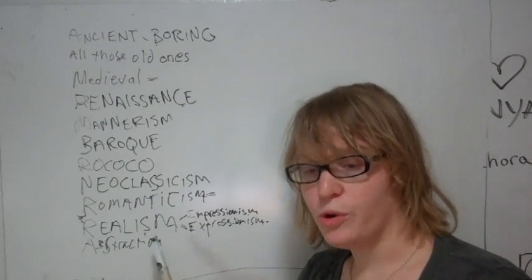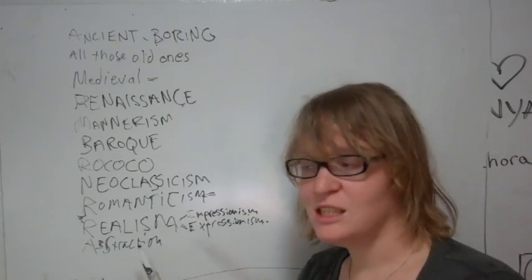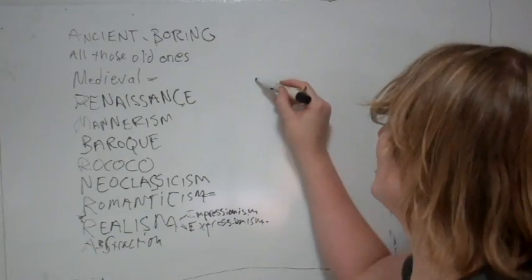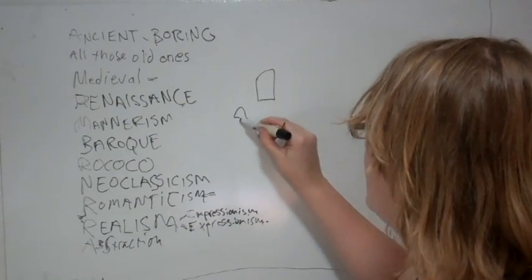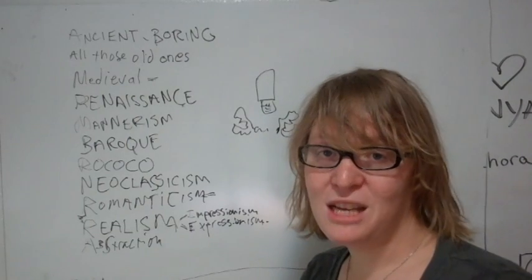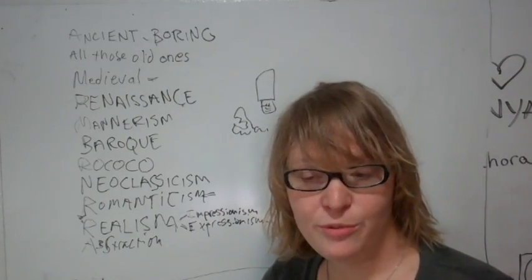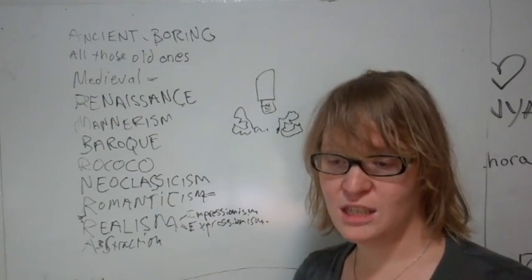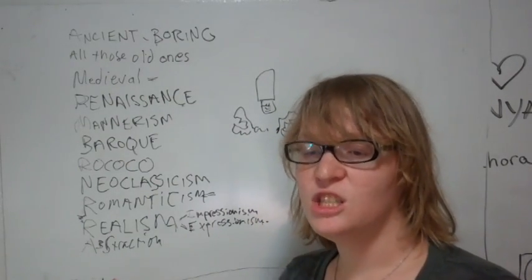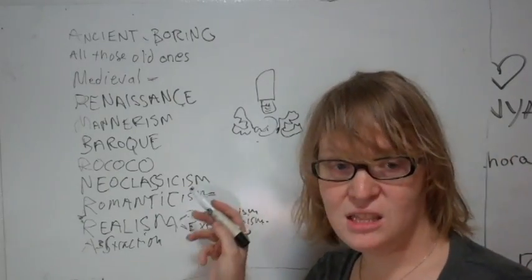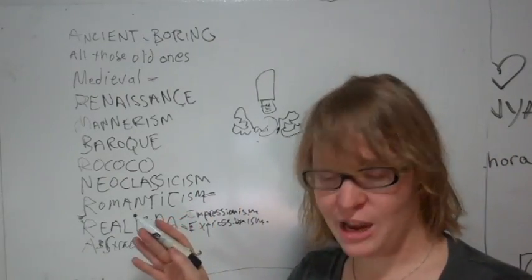We got after World War I we got Dada where art is nothing and everything. You got fucking Hugo Ball in his lobster suit doing nonsense poetry. But then at that same time you've got this movement called neue sachlichkeit which was a German movement which means new objectivity where they started doing shit a little more, not as crazy, still painting, still making things that look like things we can recognize.